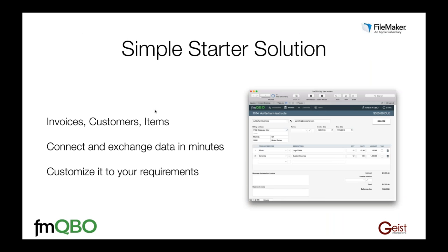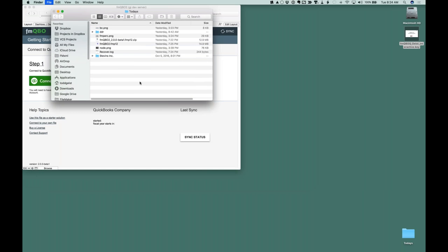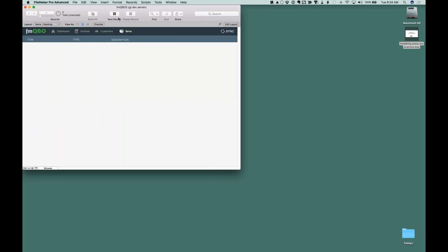The simple starter solution handles customers, invoices, and items — which, based on our experience with the first version of this product, is about 70% of what most people do or at least start with. They're selling things, so they have invoices and customers and want control over how those invoices are handled. You can connect and exchange data with QuickBooks Online in minutes. It's really simple, and from there you can customize it to your own requirements. Let's take a look at the demo. Here is that simple solution — starting with a completely empty file, no invoices, no customers, no items.